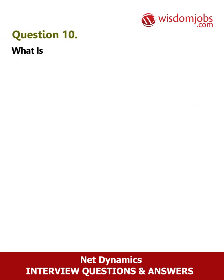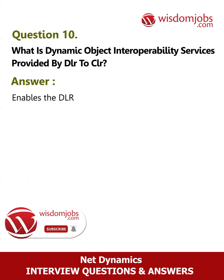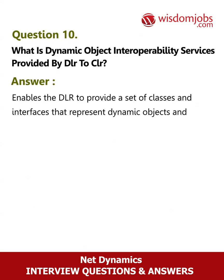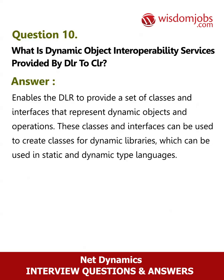Question 10: What is dynamic object interoperability — a service provided by DLR to CLR? Answer: This service enables the DLR to provide a set of classes and interfaces that represent dynamic objects and operations. These classes and interfaces can be used to create classes for dynamic libraries, which can then be used in both static and dynamic type languages.